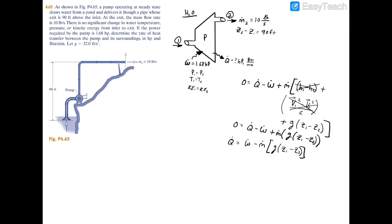Building the equation: heat transfer equals the power, which is negative 1.68 horsepower — keep a negative sign because the pump is a power-consuming device, not a power-generating one — minus the mass flow rate of 10 pounds per second, multiplied by gravity (32 ft/s²), times the change in elevation. Since z2 minus z1 equals 90 feet, z1 minus z2 equals negative 90 feet.